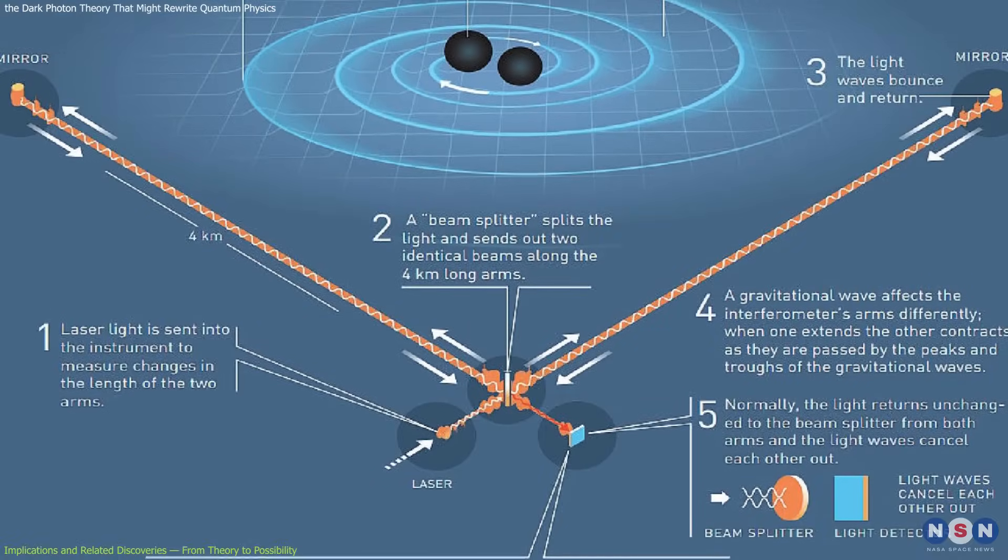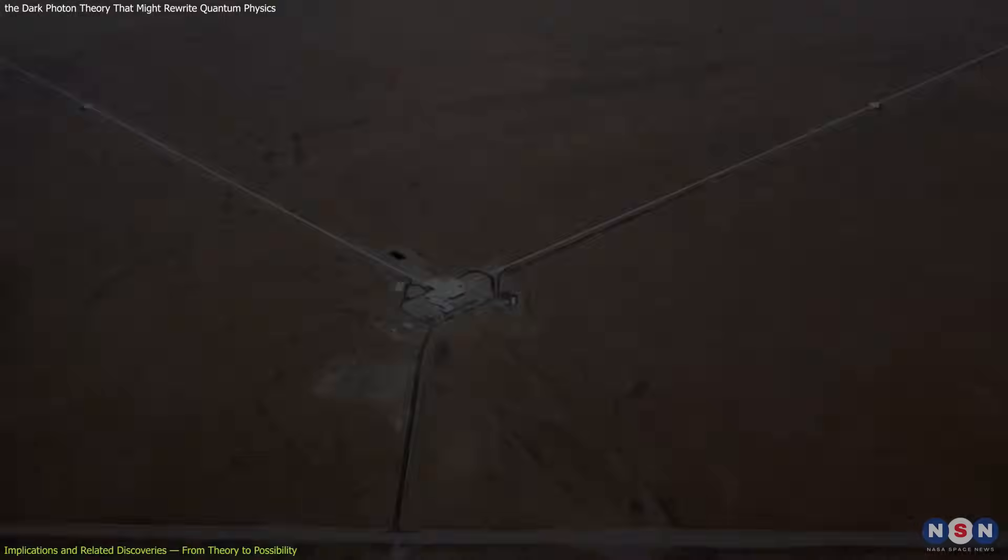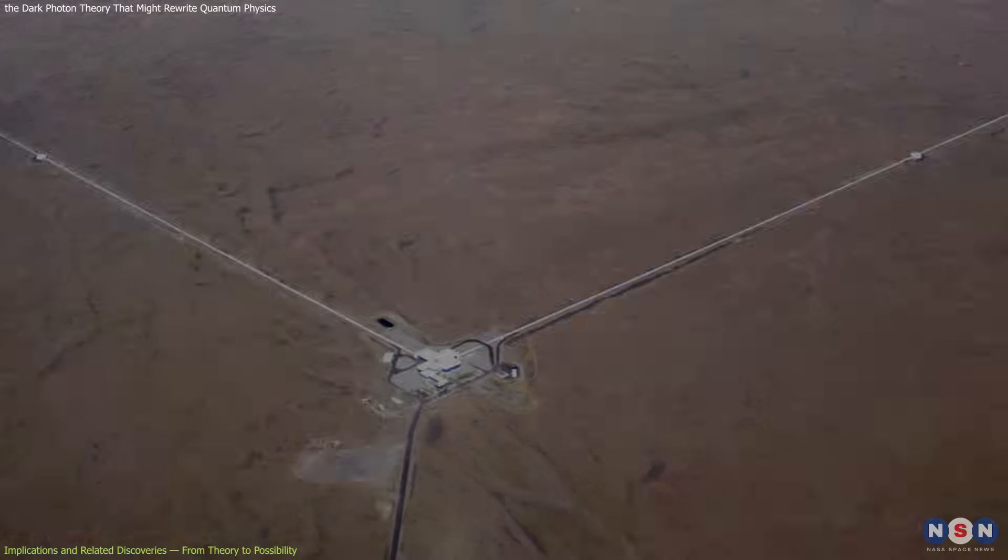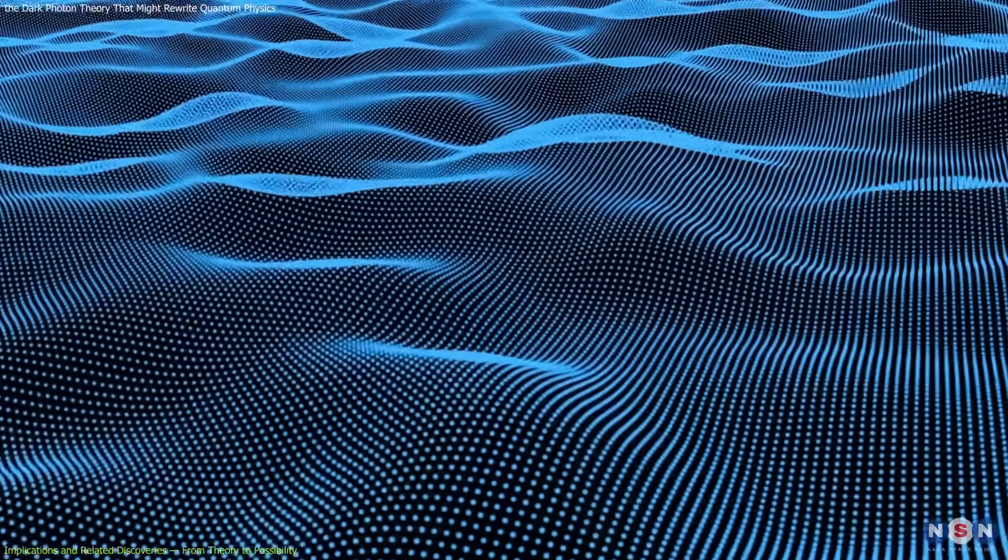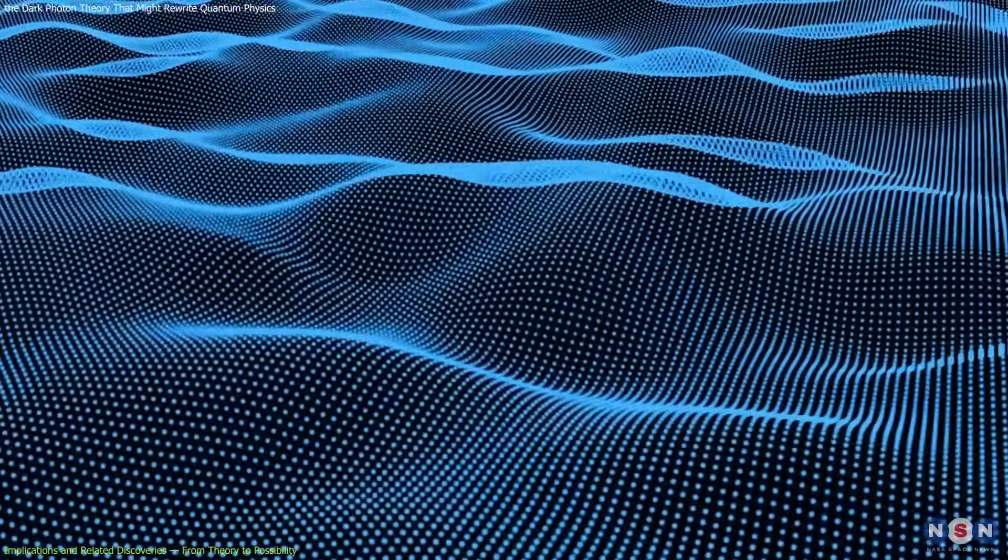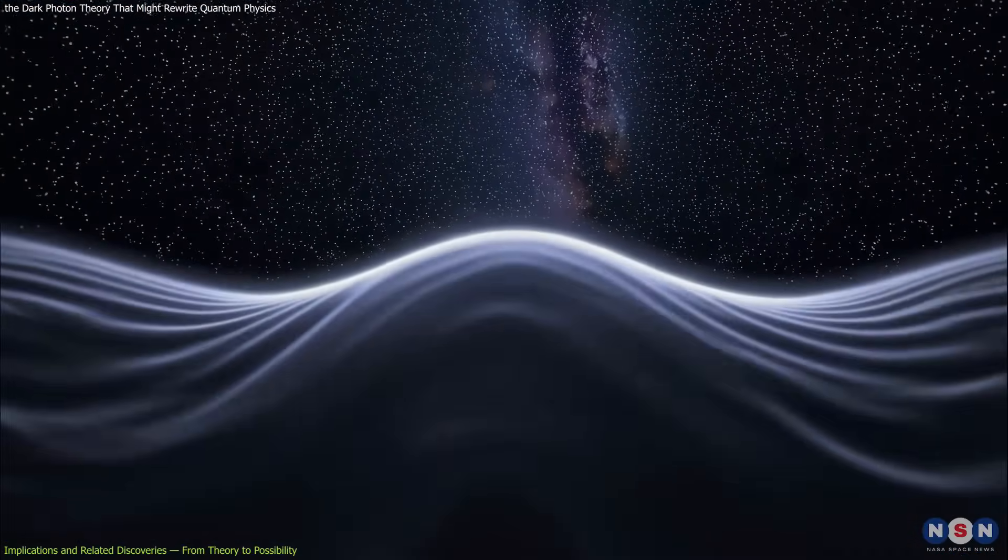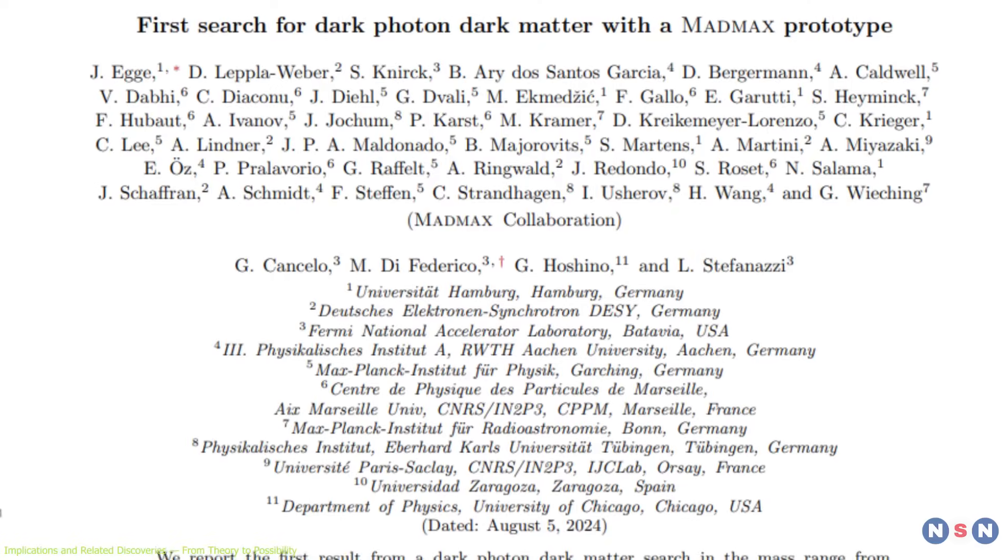Even gravitational wave detection plays into this. Tools like LIGO use squeezed light and quantum optics to detect faint spacetime ripples. Understanding how undetectable modes influence light behavior could further reduce quantum noise and enhance these observations.